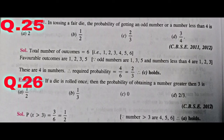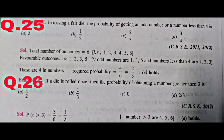Moving to question number 25. In a toss of a fair die, find the probability of getting an odd number or a number less than 4. Total outcomes = 6. Odd numbers: 1, 3, 5. Numbers less than 4: 1, 2, 3. Combined favorable outcomes (without repetition): 1, 2, 3, 5 = 4 outcomes. Probability = 4/6 = 2/3. Option C is correct.